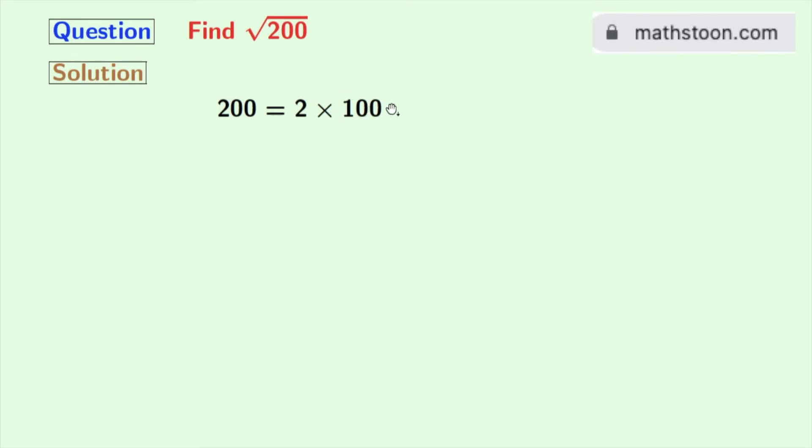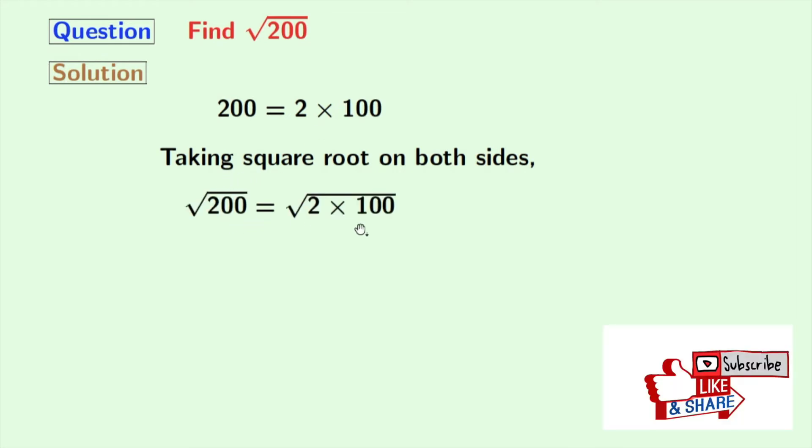Now we will take square root on both sides. Doing so, we get square root of 200 is equal to square root of 2 times 100. Now we will rewrite this as square root of 2 times square root of 100.